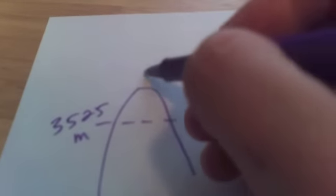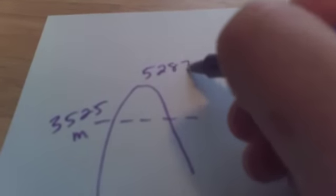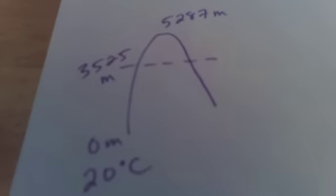Take note of the height at the point of condensation, the height at the top of the mountain, your starting level. Today we're looking at sea level which is 0 meters and the temperature at starting level which is 20 degrees Celsius.